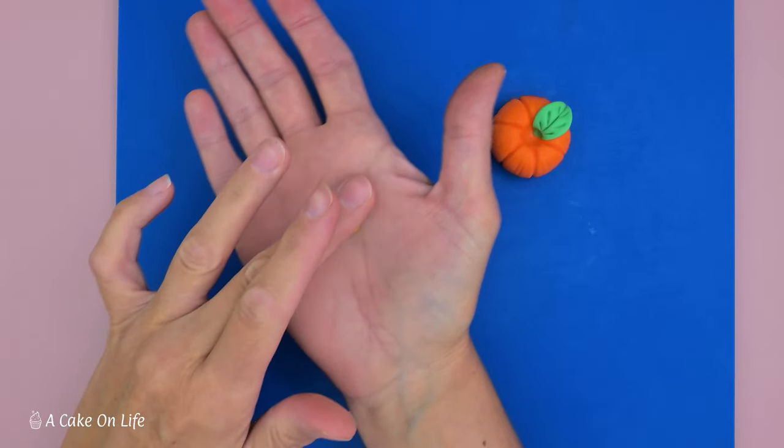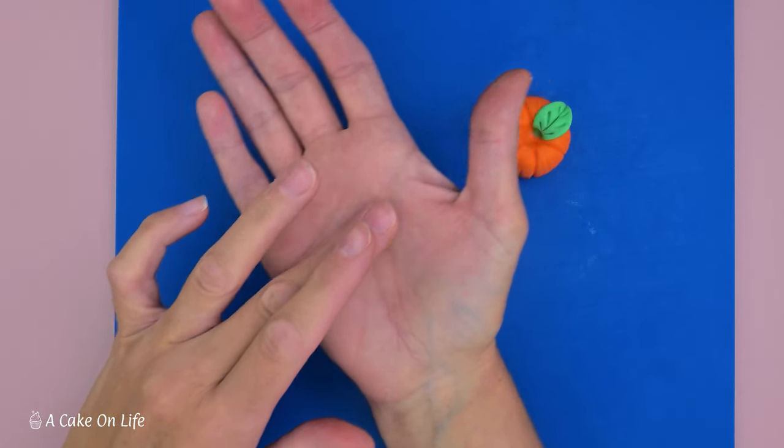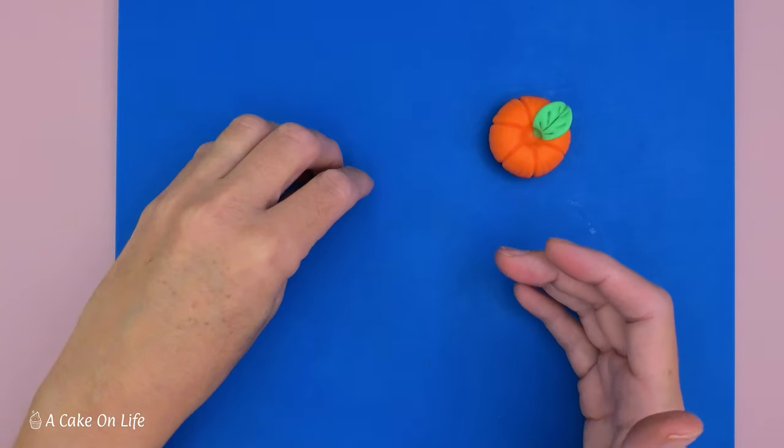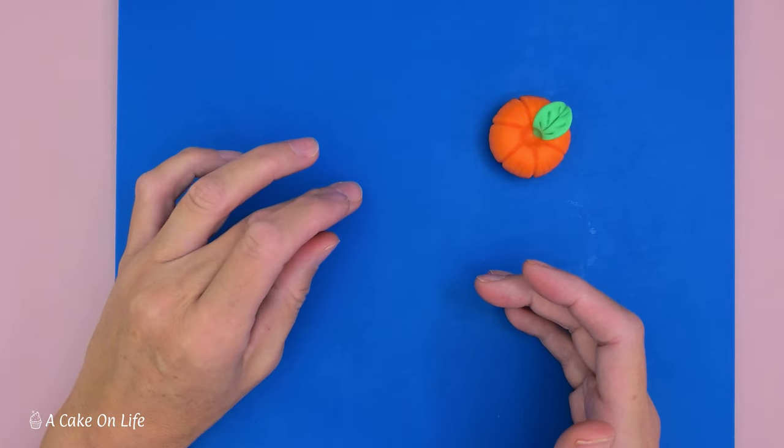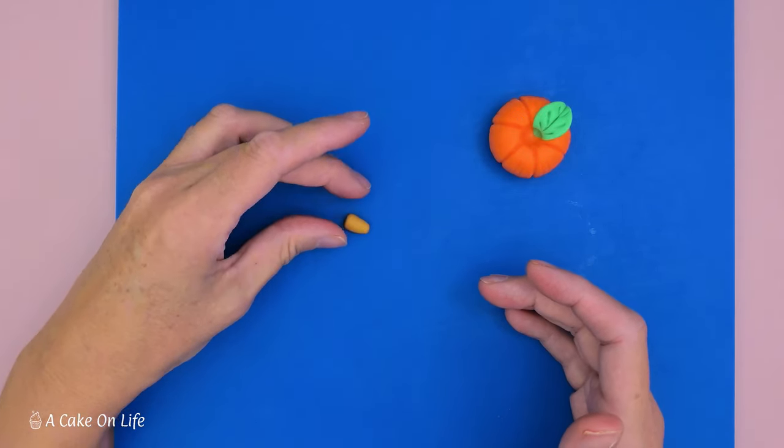And now I'm just going to do the stalk. I've just got a little bit of brown modeling paste, I'm just going to form it into like a little triangle cone shape, so it's bigger at the bottom, flatten the top.